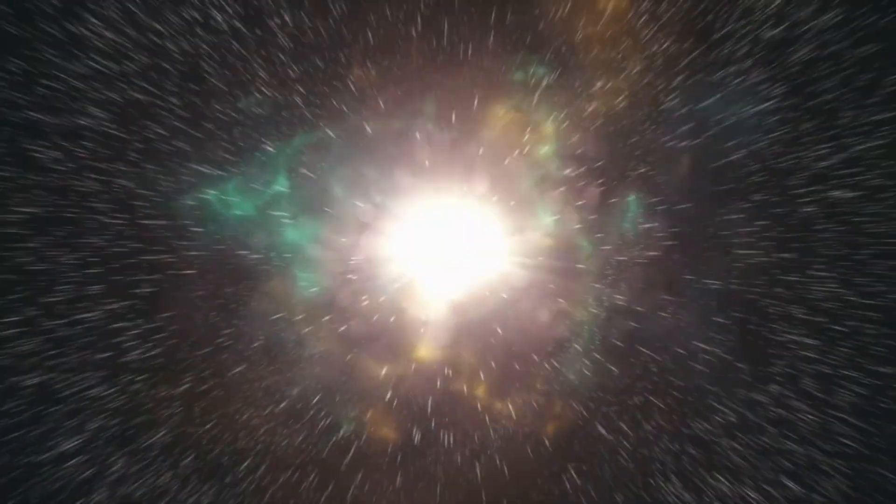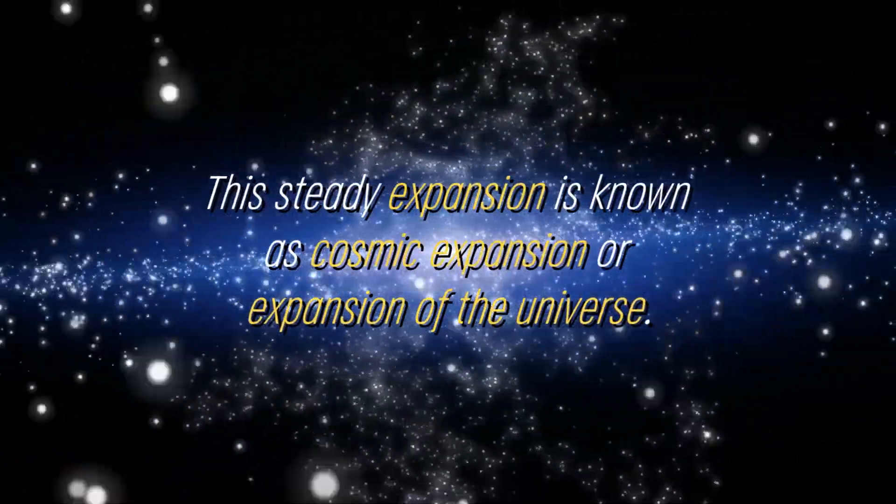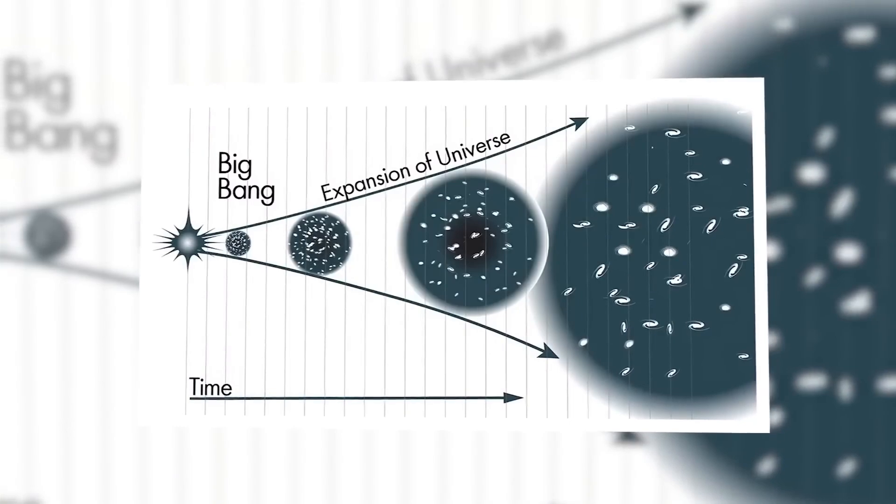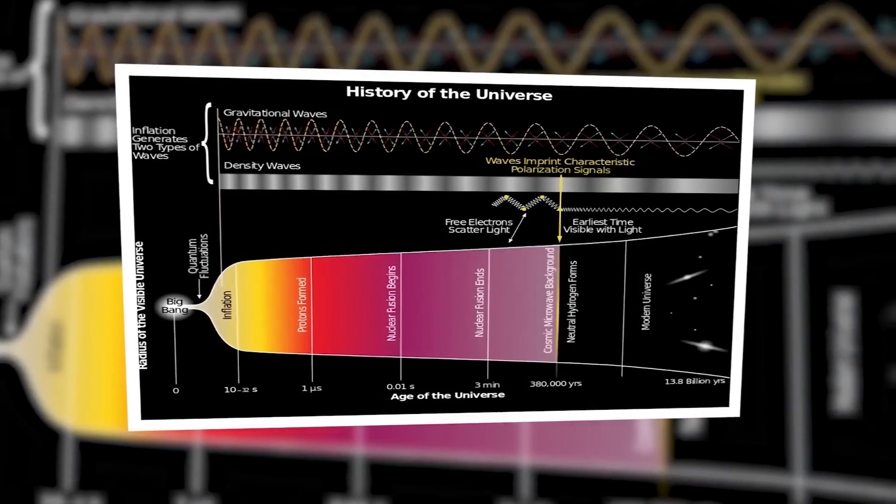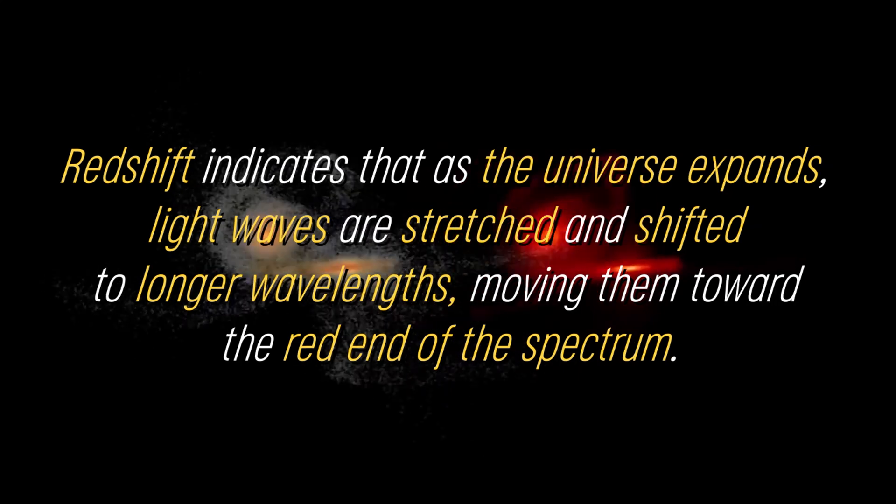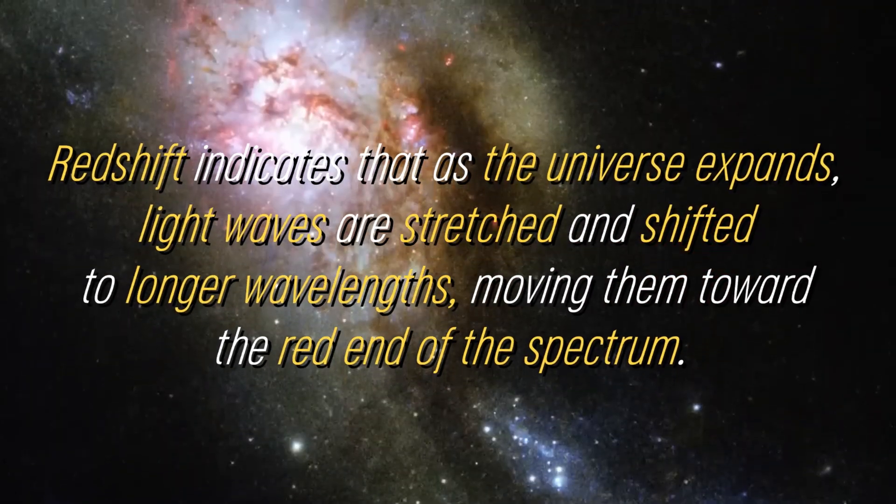As the universe continued to expand, the rate of expansion gradually slowed. It is important to note that although there was rapid cosmic inflation in the initial period, the universe continued to expand at a measurable rate. This steady expansion is known as cosmic expansion, or expansion of the universe. Scientists have observed the effects of this expansion through various observations, such as the redshift of light from distant galaxies. Redshift indicates that as the universe expands, light waves are stretched and shifted to longer wavelengths, moving them toward the red end of the spectrum.